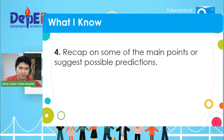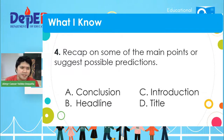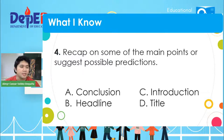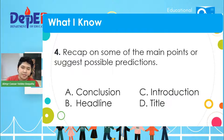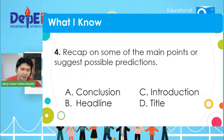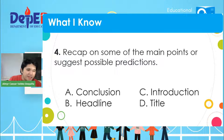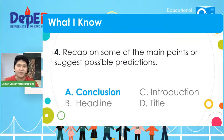Number four: Recap on some of the main points or suggest possible predictions. What part of the news is that? Choices: A) conclusion, B) headline, C) introduction, D) title. Pag sinabi nating recap — the correct answer is letter A. Timothy Joseph Martinez, correct — the answer is letter A, that's your conclusion.